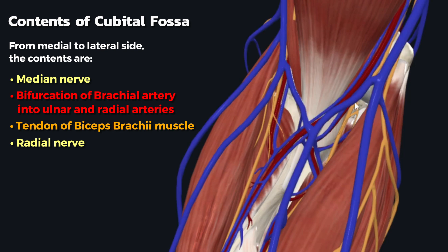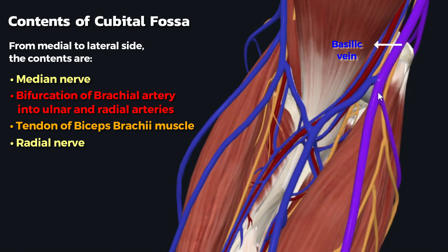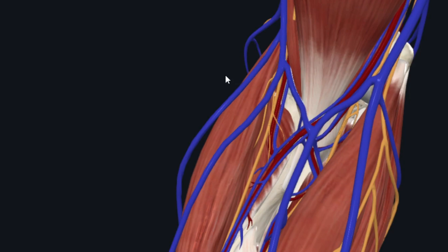In the roof of the cubital fossa there passes a vein called the median cubital vein, which joins the basilic vein to the cephalic vein. These were the contents of the cubital fossa, and with that our tutorial on the cubital fossa comes to an end. If you have any confusion about what we studied, you can ask in the comment section. Thank you.